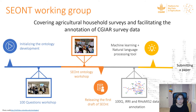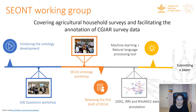The SEONT working group worked together to build the ontology. A 100-question workshop was held in Rome, where we finalized 100 questions for the agricultural household survey. After that, we structured the terms in the socioeconomic domain, defined the methodology for building the ontology, and released the first version. We then annotated three household surveys: the 100 questions, the IFPRI data, and the NOMIS2 data, which is a well-known dataset in CGIAR.